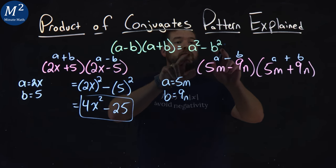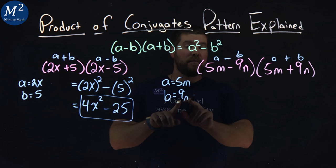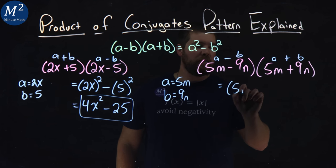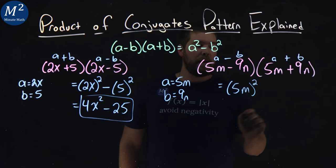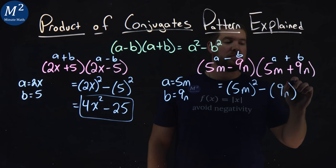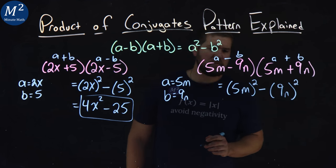So we need to rewrite this in this form. Again, 9n is positive. So A squared, 5m all squared, minus our B squared, 9n all squared. All right, now let's simplify.